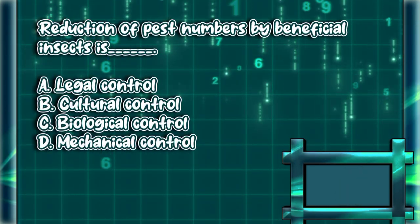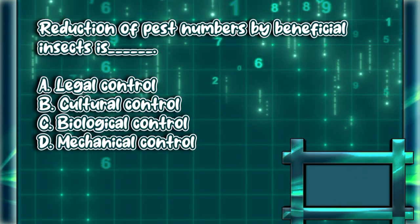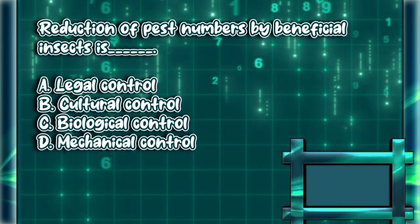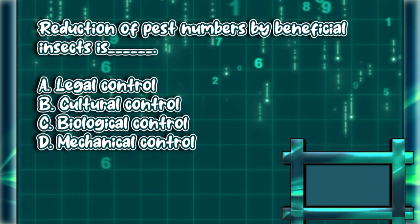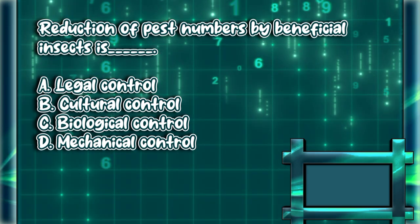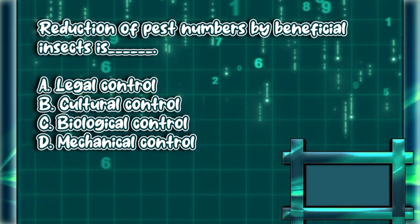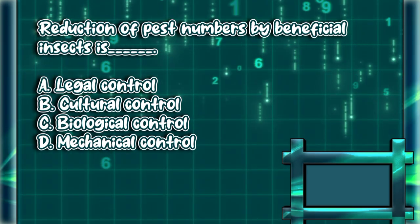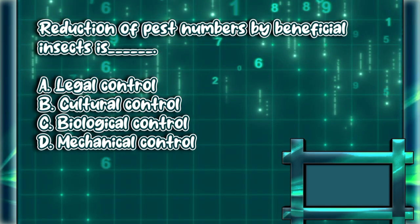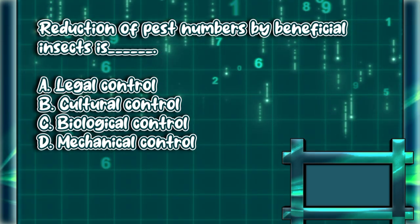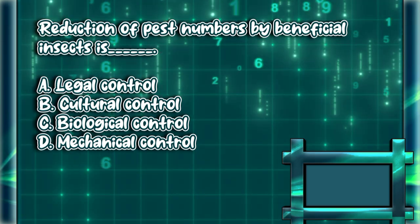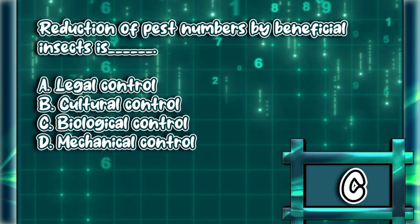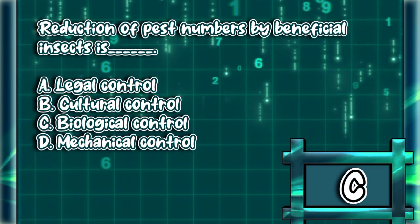Reduction of pest numbers by beneficial insects is: A. Legal control. B. Cultural control. C. Biological control. D. Mechanical control. The answer is letter C.